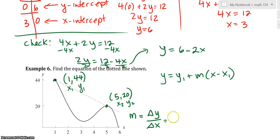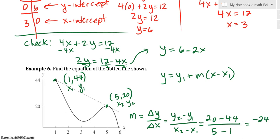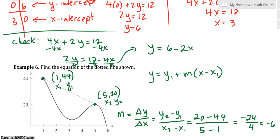I'll call this my second point x2, y2. So it would be y2 minus y1 over x2 - x1. So it would be 20 - 44. And then it would be 5 - 1. So it looks like it would be -24/4, which is -6.